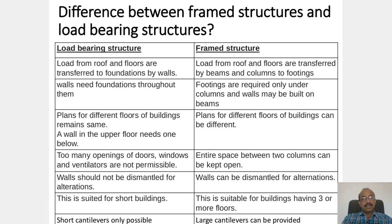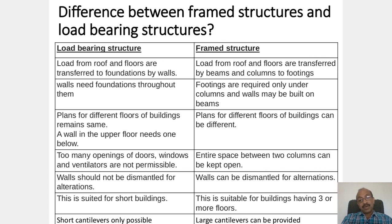In load bearing structures, too many openings of doors, windows, and ventilators are not permissible, whereas in frame structures the entire space between two columns can be kept open. In load bearing structures, walls should not be dismantled for alteration as the wall itself carries the load, whereas in frame structures walls can be dismantled for alterations. Load bearing structures are suitable for short buildings, whereas frame structures are suitable for buildings having three or more floors. Load bearing structures can have short cantilevers only, whereas in frame structures large cantilevers can be provided.